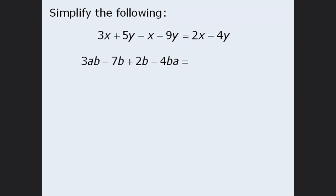Here's another one. Once again we can simplify this by combining like terms. Here we have 3ab and negative 4ba. Since a times b is the same as b times a, these two terms are like terms. So 3ab minus 4ba simplifies to be negative 1ab, which we can write as negative ab.